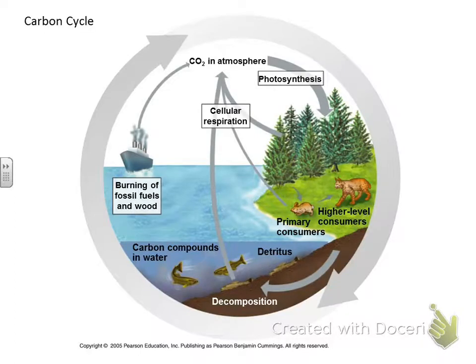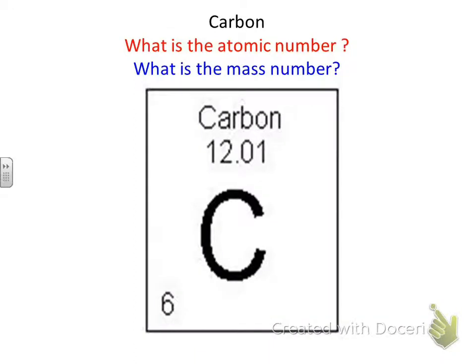So carbon, if you look back at this picture, carbon has four valence electrons in its outer shell. So it has two on the inner shell, and then it has one, two, three, four valence electrons. And so what that means is that carbon can combine with four different molecules.